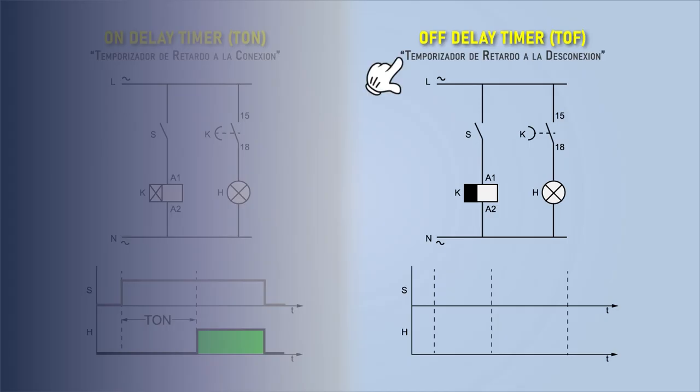Timer off delay, known by its abbreviation TOF, allows the circuit to be disconnected by switching its contacts to their default state after a certain time after the deactivation signal is generated.